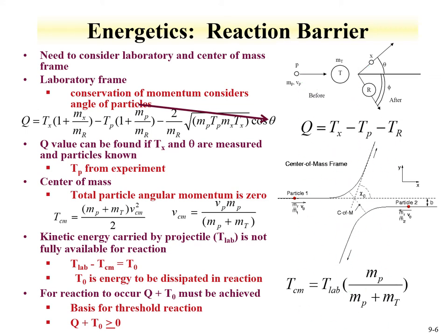For the center-of-mass frame, where equations are often performed, the total particle angular momentum is zero — it's as if the products and reactants are hitting each other. The kinetic energy in the center-of-mass frame equals the lab kinetic energy times the ratio of the projectile mass to the sum of projectile and target masses.